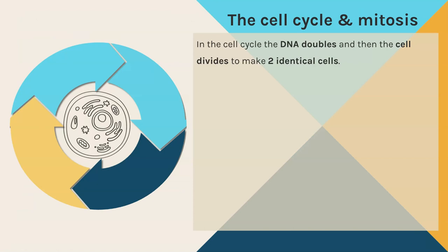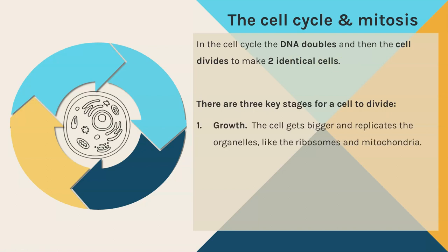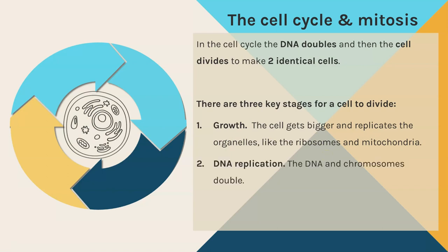The cell cycle is split into three key stages. In the cell cycle the DNA doubles and then the cell divides to produce two identical cells. The first stage is that the cell has to grow - if the cell is going to split in half to make new cells it has to grow first so every cell doesn't become smaller and smaller. The cell gets bigger and all of the organelles - the internal cell structures - also replicate. The DNA also doubles through DNA replication, so there are now two copies of every single chromosome. This ensures that when the cell splits in half, both new cells have the correct number of chromosomes - in humans that's 23 pairs or 46 in total.